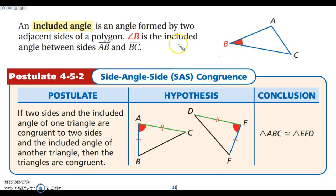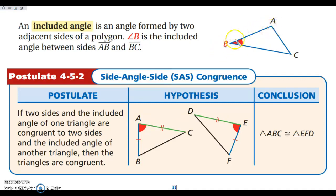So let's take a look at the next one. We are looking at what is called an included angle. The included angle is the angle between where two sides meet. So if I look at side AB and side CB, the angle where they meet is angle B. So angle B is the included angle between sides AB and CB. This leads us into our next shortcut — our next theorem or postulate.